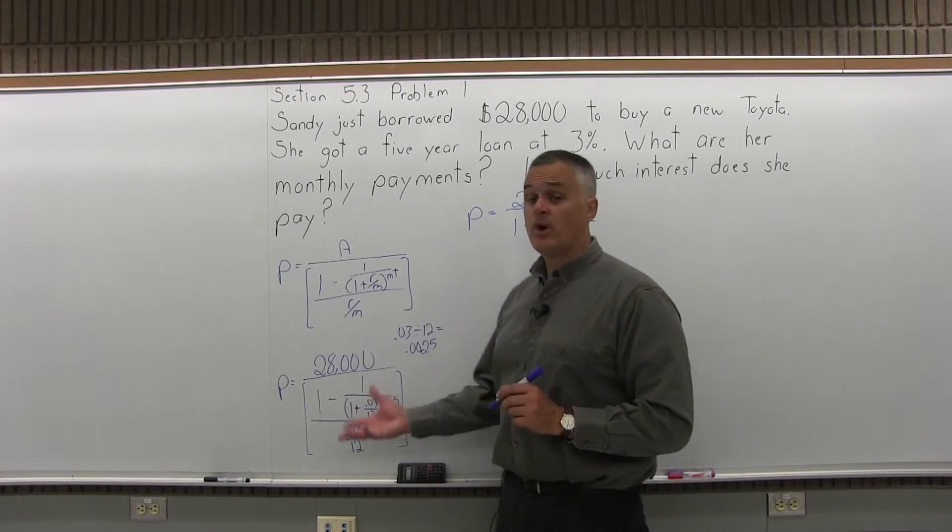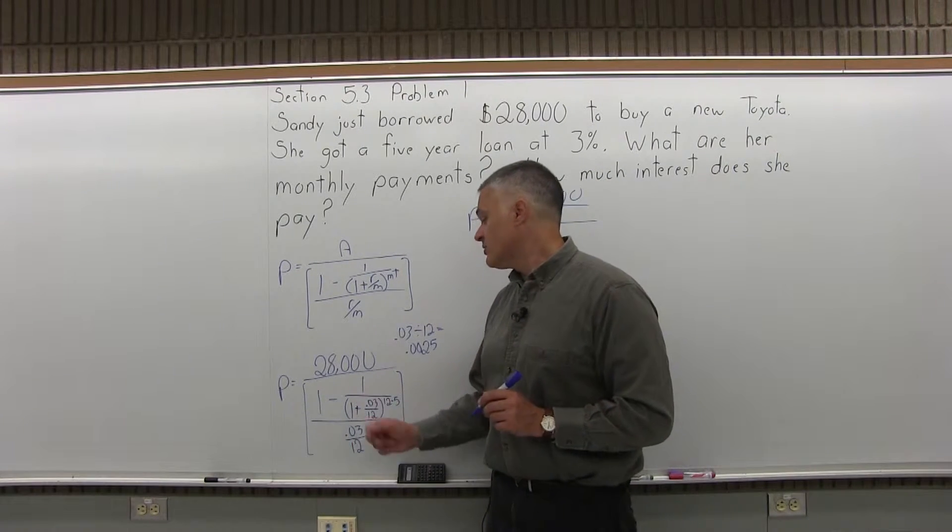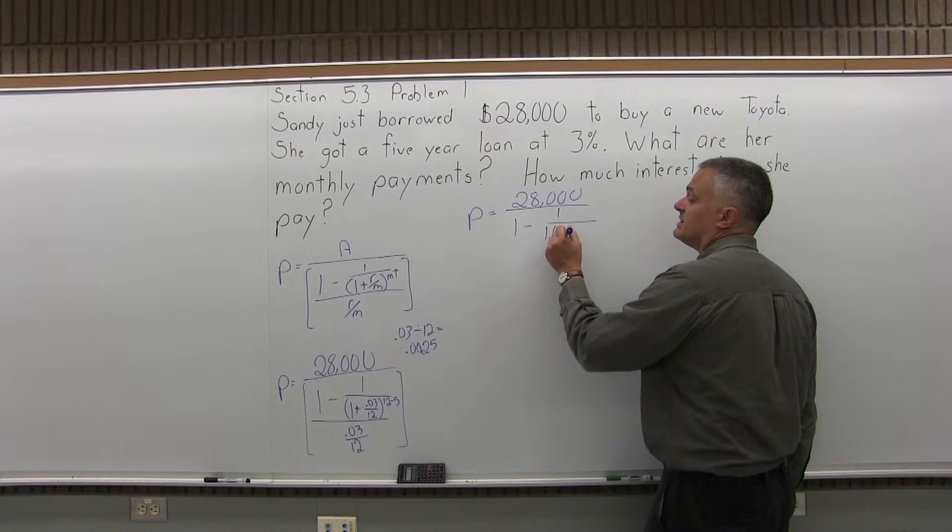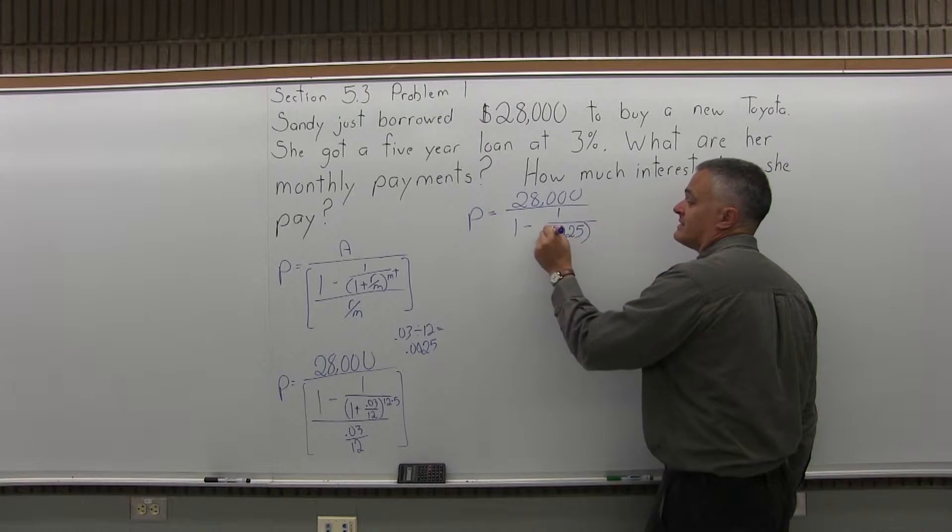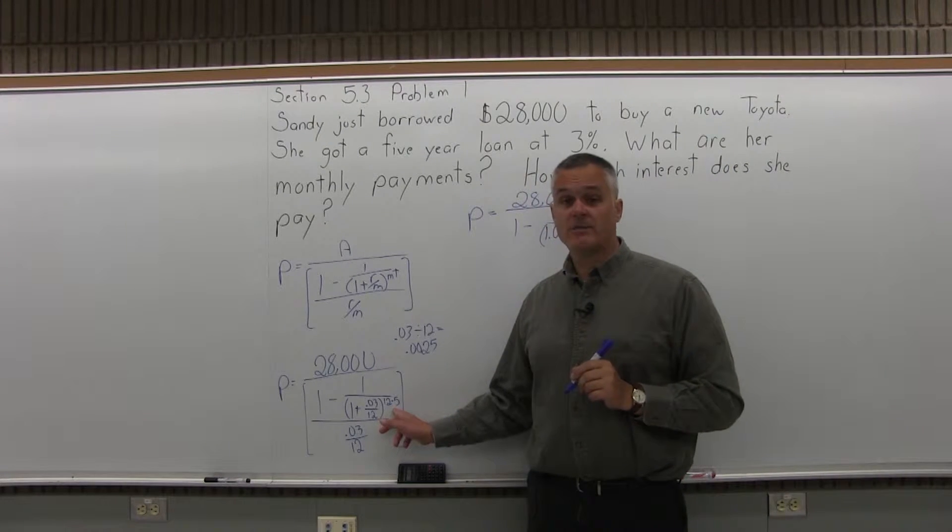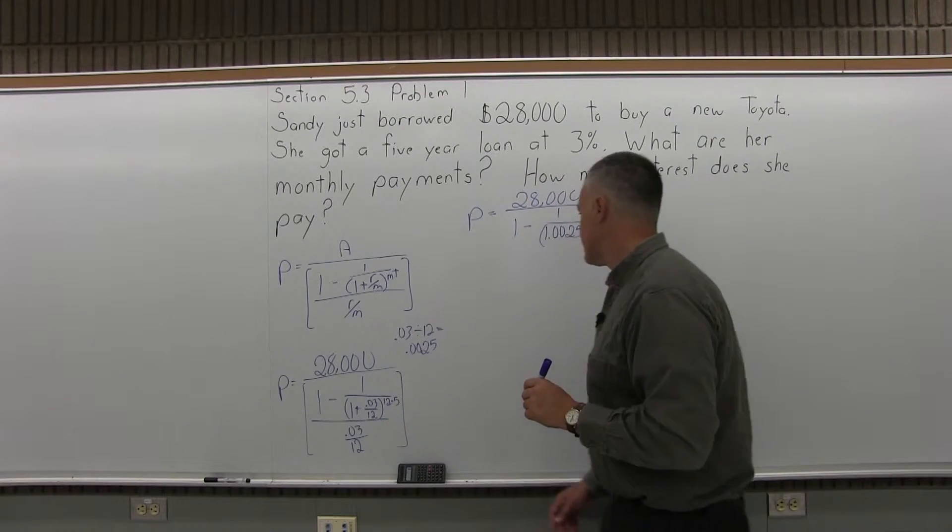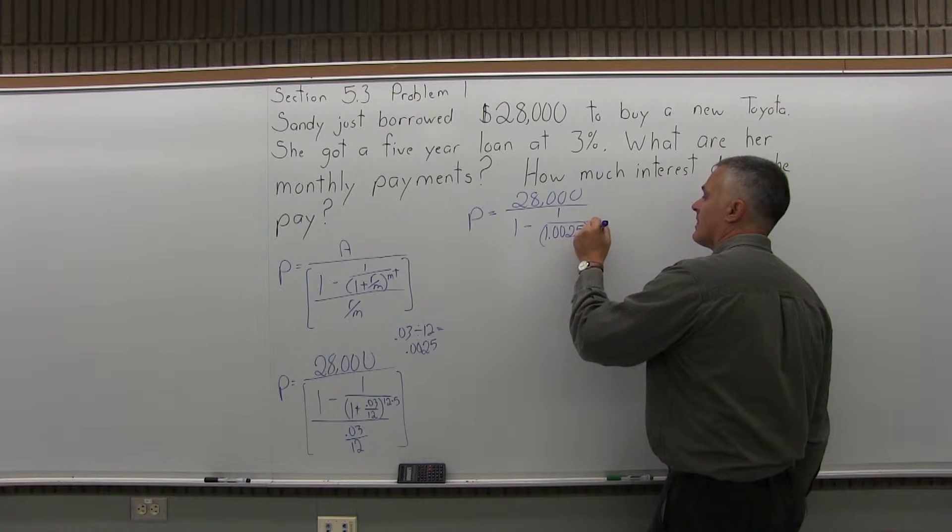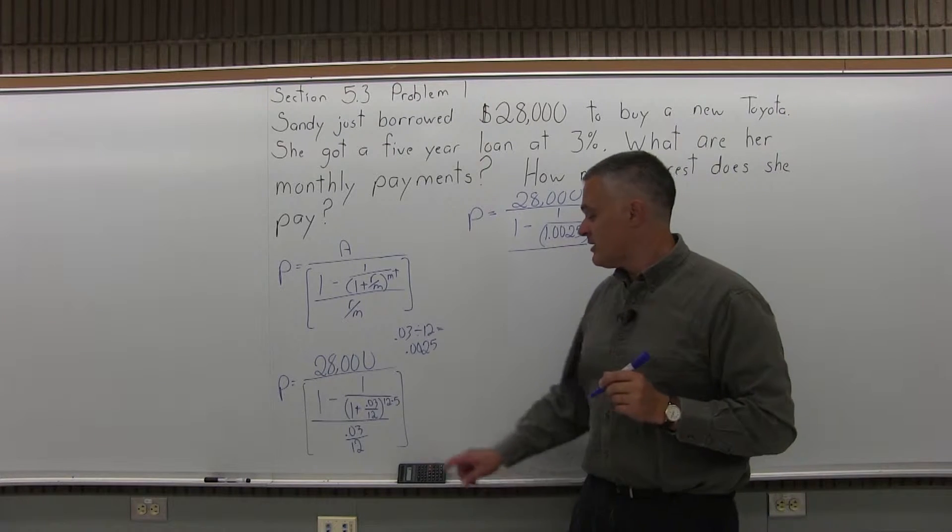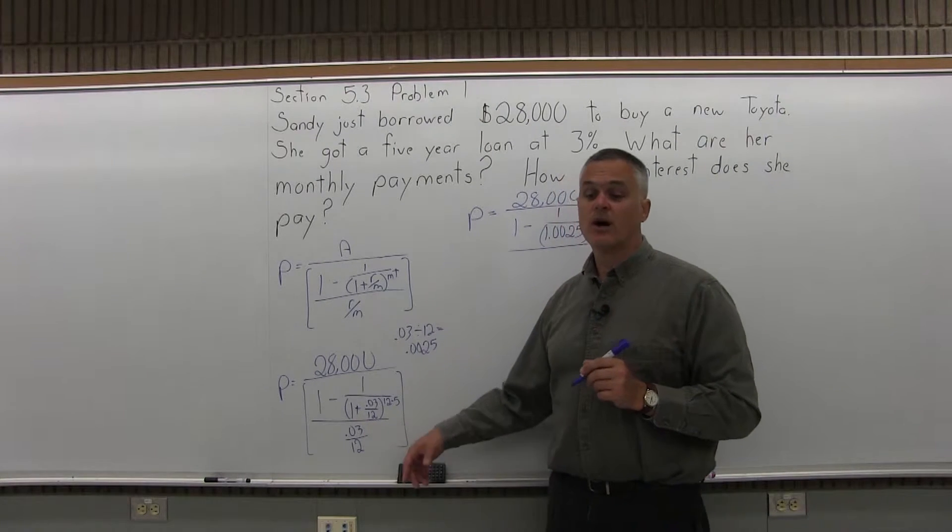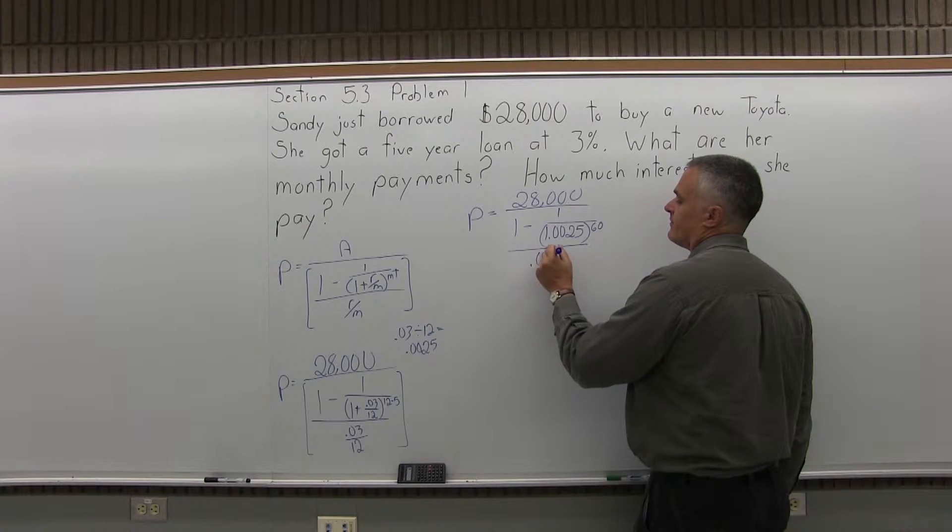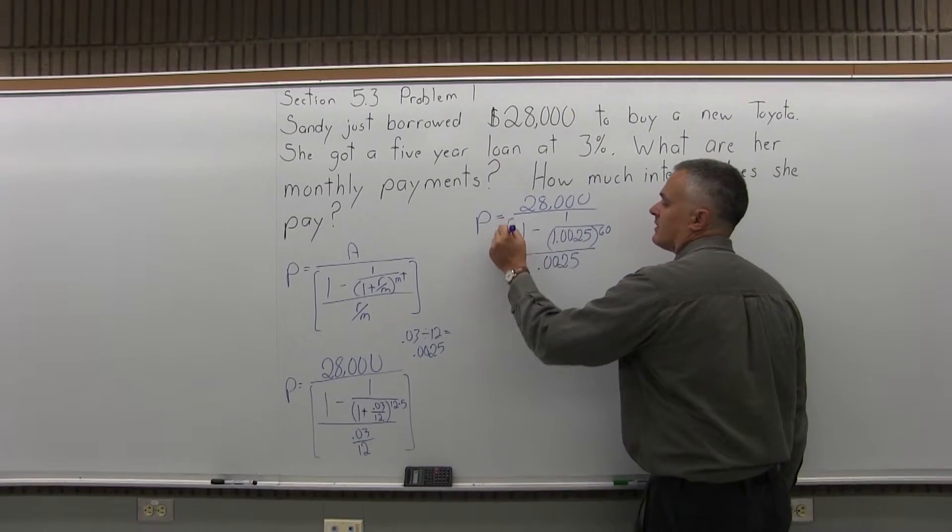And there's a plus 1 in front of that so .0025 plus 1 is going to give us 1.0025 in the parentheses. And now the exponent on those parentheses is 12 times 5, now 12 times 5 is 60. And then the brackets that we're working in have a denominator and the denominator is that .03 over 12 which again is .0025.